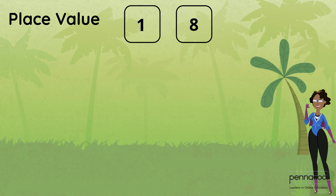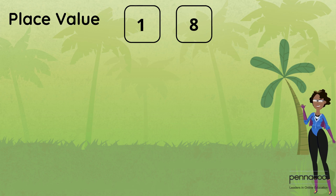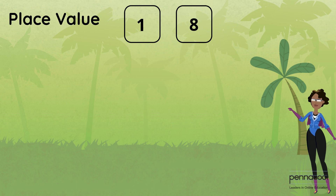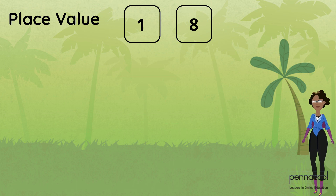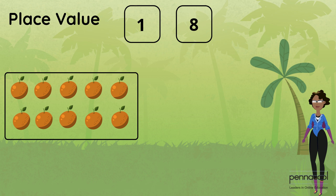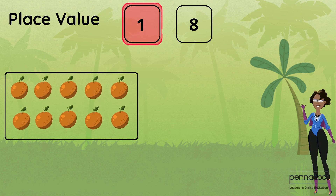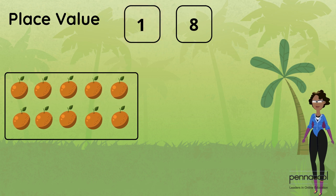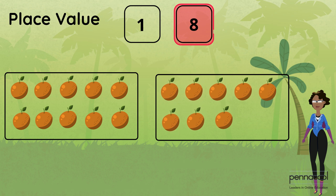Now why is that? In the number 18, if we use oranges to count it out, there would be one set of tens, which gives us our one in the tens place, and then eight left, which would be our ones.